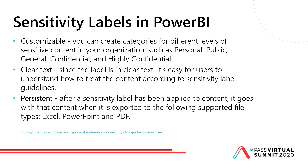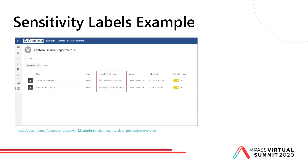Sensitivity labels in Power BI are customizable. You can create categories of different levels of sensitivity — personal, public, general, confidential, highly confidential. Since the labels are clear text, they're easy for users to understand how to treat content based on sensitivity. They're also persistent: after a sensitivity label has been applied to content, it goes with the content when it's exported. You'll see that label especially in things like PowerPoint exports. When sensitivity labels are set up in the dashboard, you get options like Confidential Internal or Highly Confidential Internal.